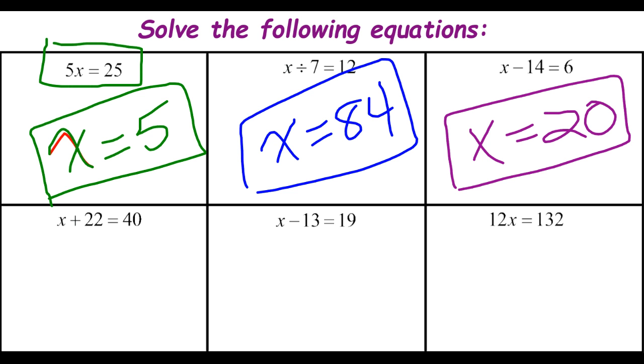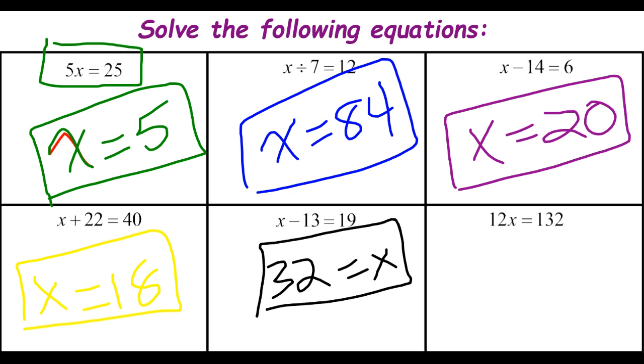Back down in the bottom left, if x plus 22 equals 40, in order to get to 40 from 22, we have to add 18. For the bottom center one, in order to take 13 away to get 19, we have to start at 32. If we multiply x by 12 to get 132, that means our original x is going to need to be 11.